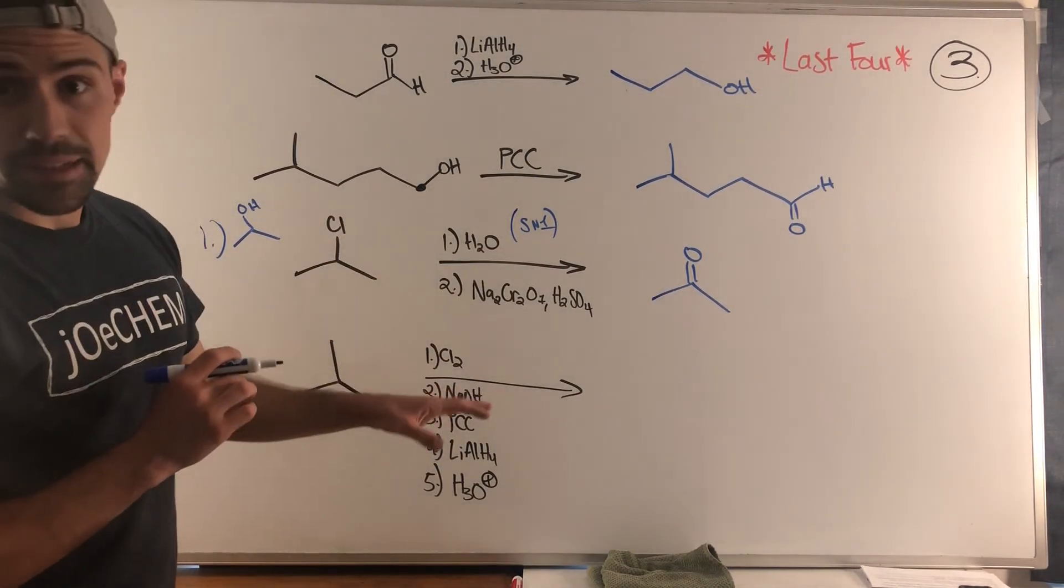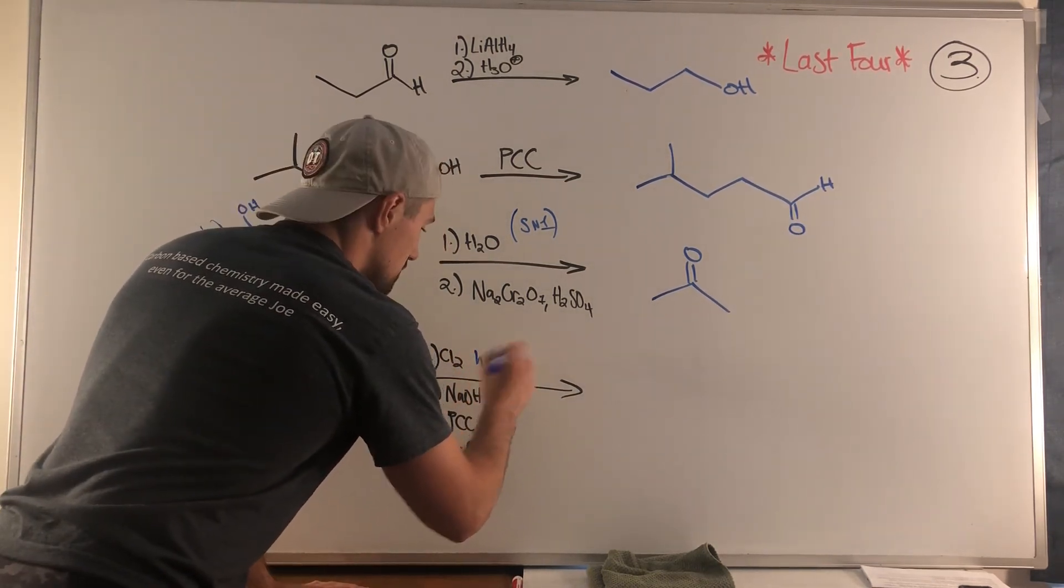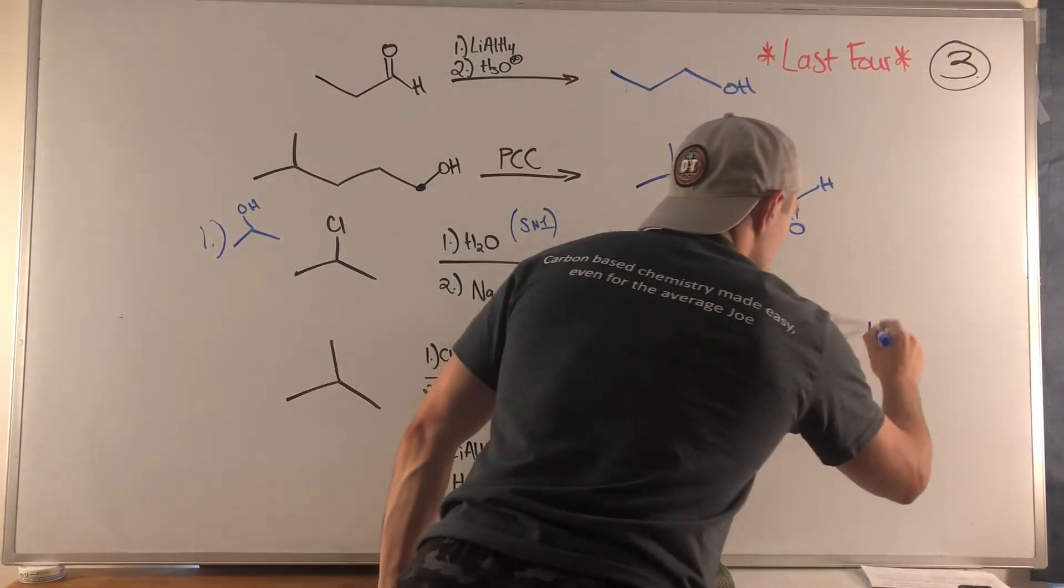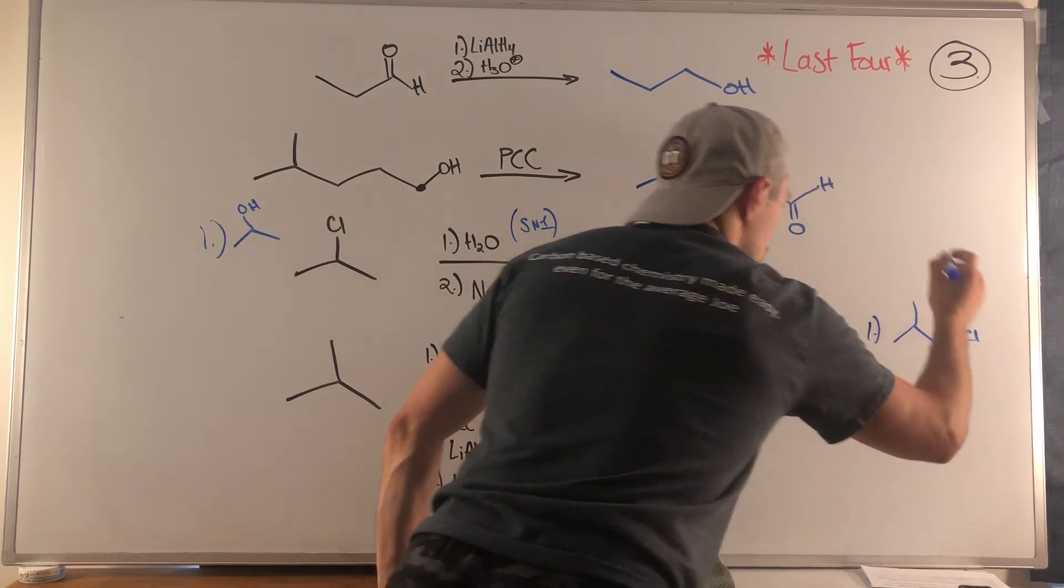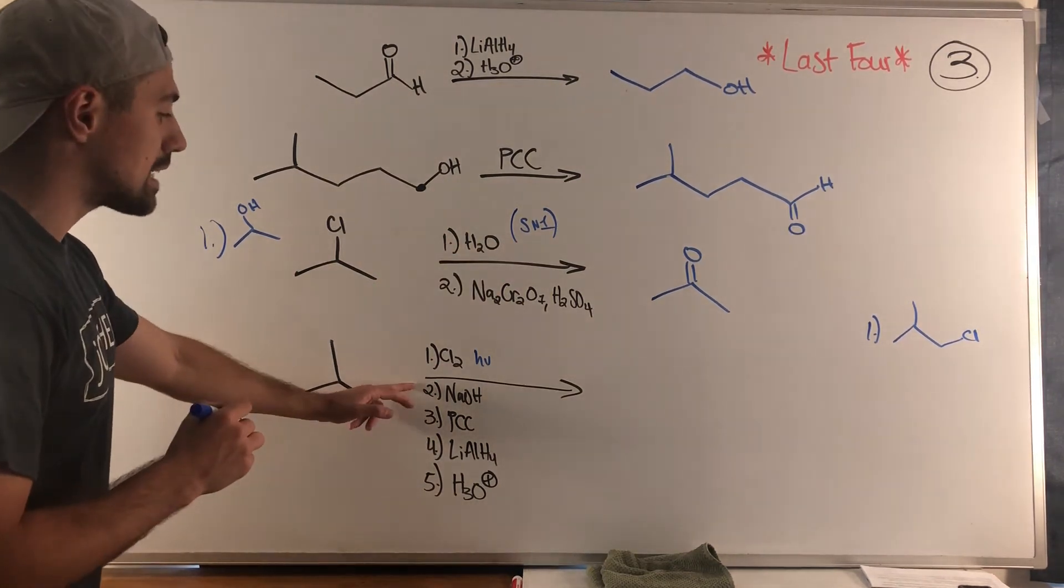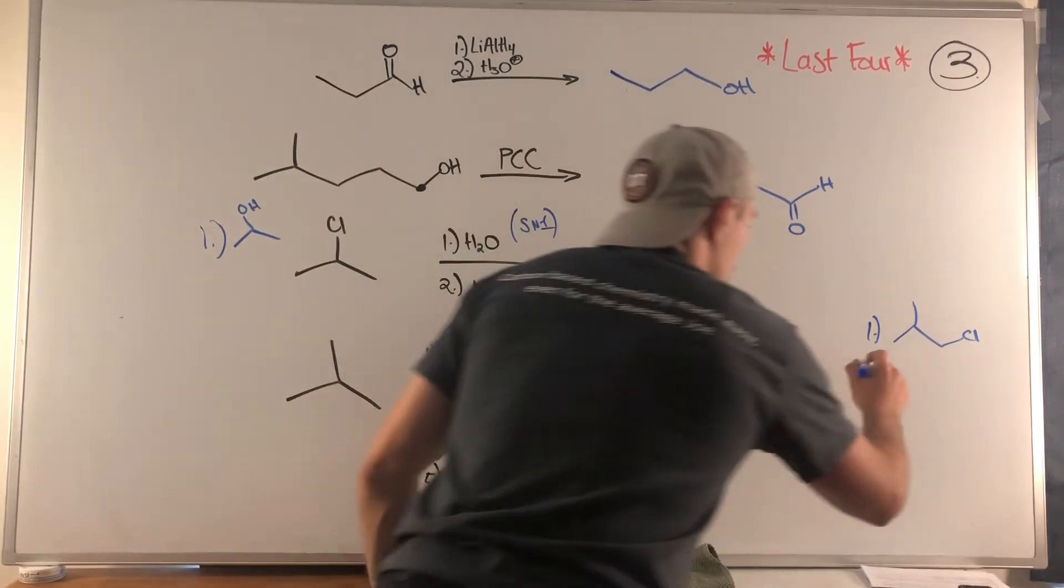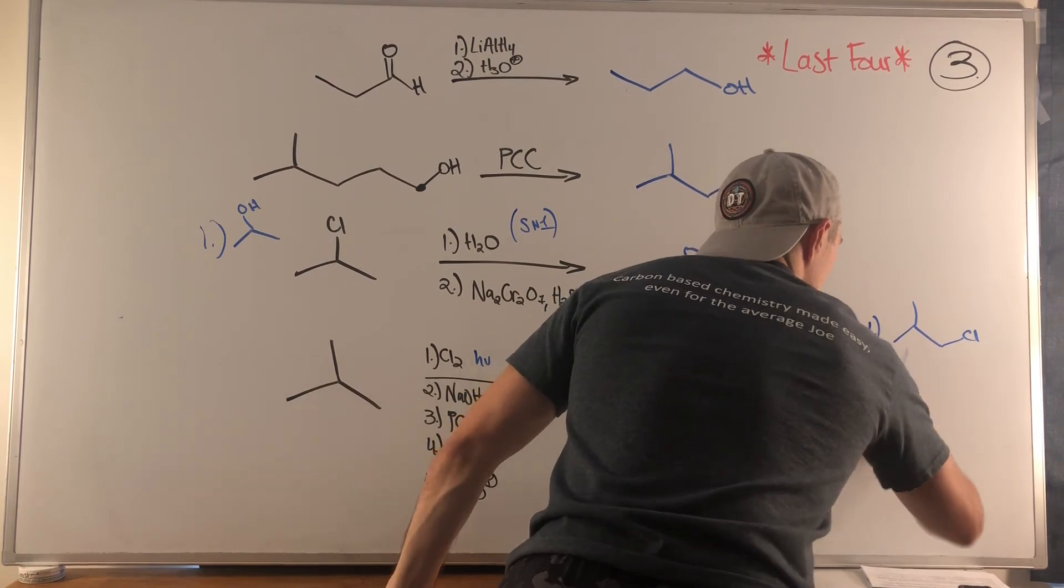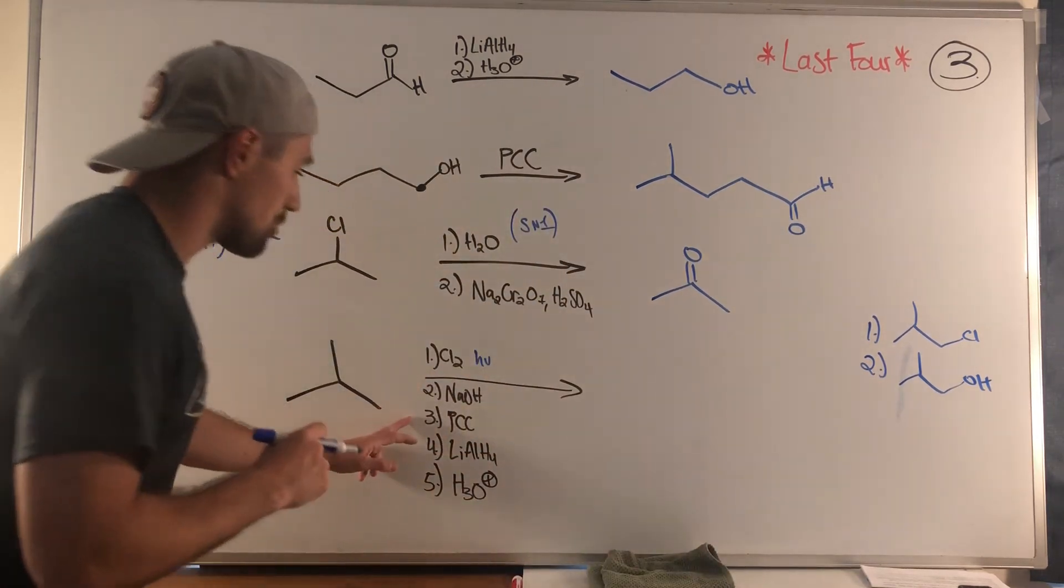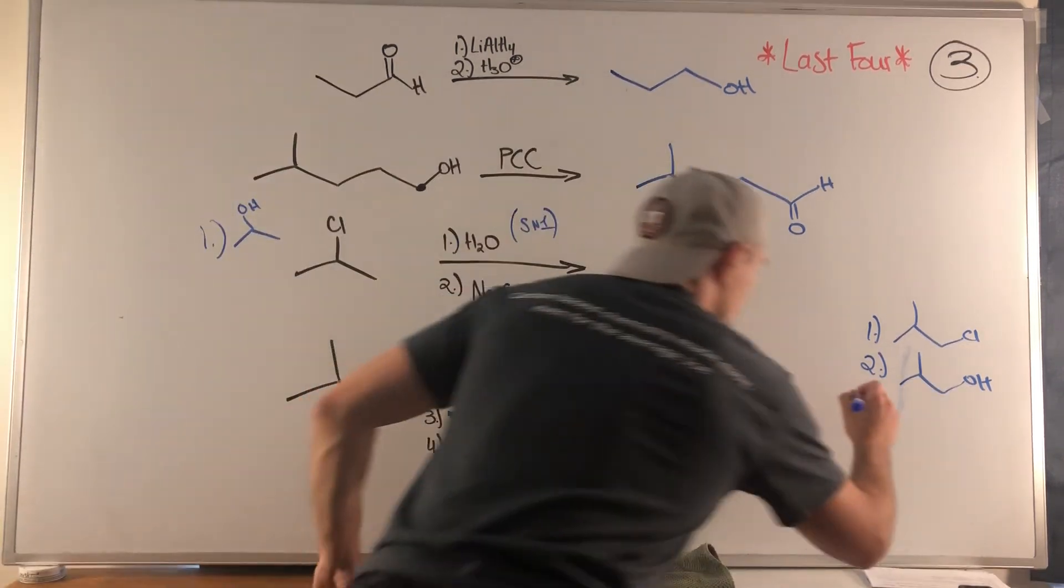Let's take this one step at a time. First step we're doing free radical halogenation. Remember chlorine's less picky so we will put a chlorine on one of the primary carbons in isobutane, so we'll get isobutyl chloride. Second step, NaOH with a primary carbon and good leaving group means we're doing SN2, replacing the chlorine with an OH. Step three, we're going to oxidize that. Since it's a primary alcohol we're using PCC to get an aldehyde.